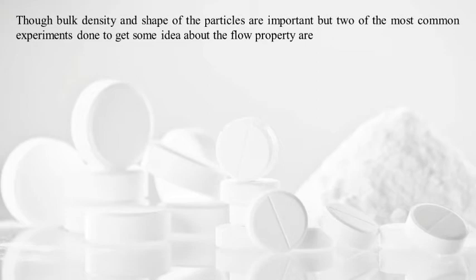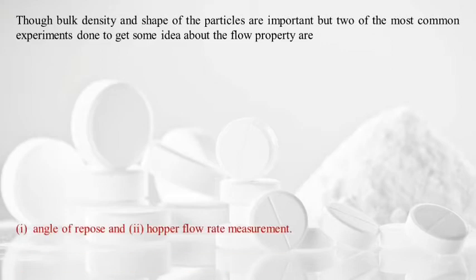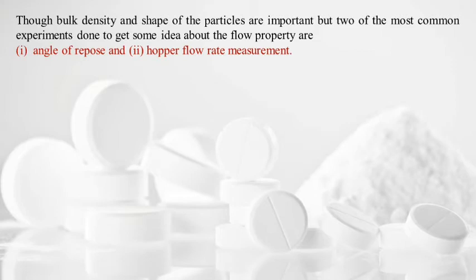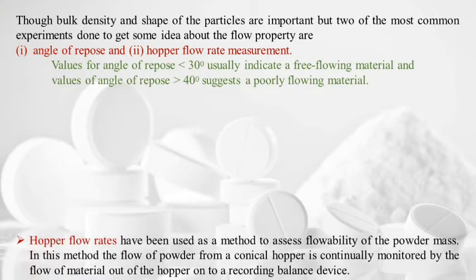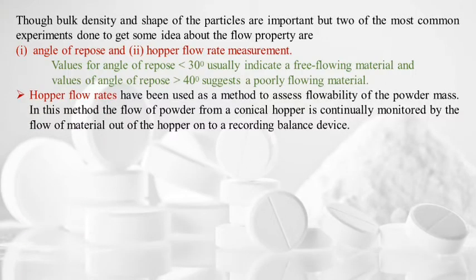Two important measurements for assessing flow properties of powders are angle of repose and hopper flow rate. If the angle of repose is less than 30° it indicates free-flowing material; if more than 40° it suggests poorly flowing material. In hopper flow rate measurement, the flow of powder from a conical hopper is continually monitored by flow of material onto a recording weighing balance.